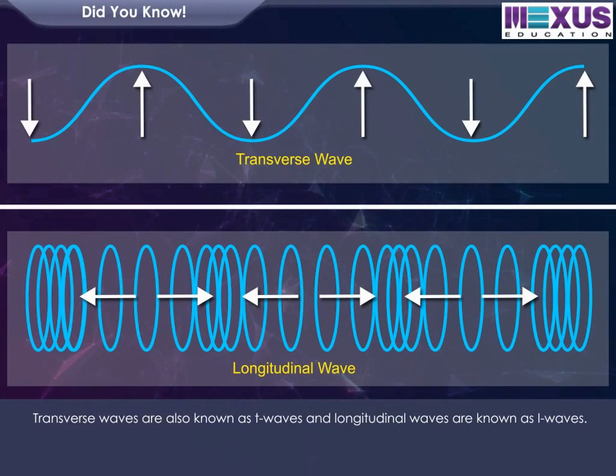Transverse waves are also known as T waves, and longitudinal waves are known as L waves.